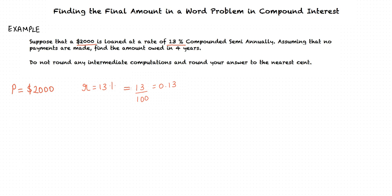Next, the amount has been loaned at 13% interest. Hence, the rate of interest r equals 13%, which equals 13 divided by 100, which equals 0.13.